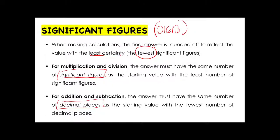When you add and when you subtract, you have to take note of the decimal places. When multiplying or dividing numbers with different amounts of significant figures, the amount of significant figures in your answer must be based on the starting value with the lowest amount of significant figures. For addition and subtraction, you will follow the number of decimal places of the value with the lowest amount of decimal places. You will understand this better when we have our examples.